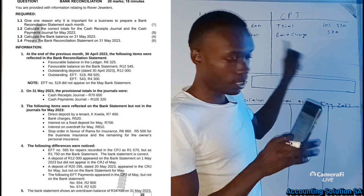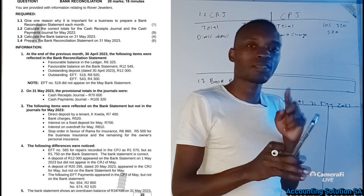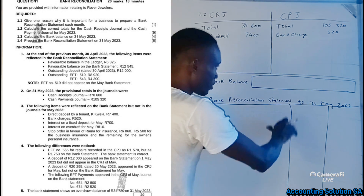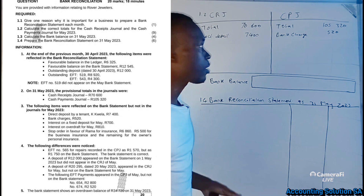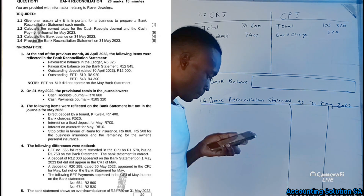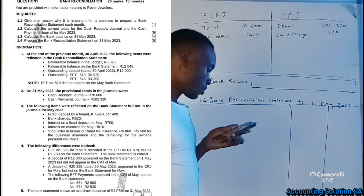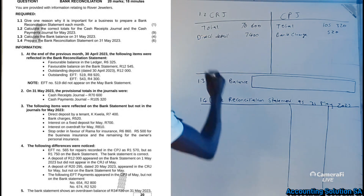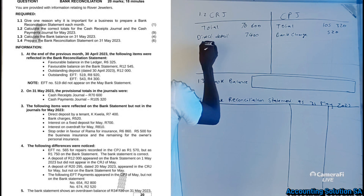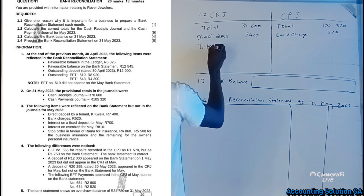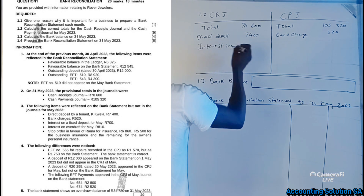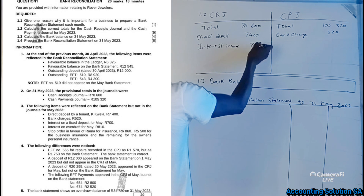Remember, we are recording items that are not reflected in the journals but are reflected on the bank statement — we have to record them here so that everything matches. Interest on fixed deposit for May is R700. We receive interest, so obviously it must go in the cash receipts journal as interest income, since we invested and this is income to us — R700.